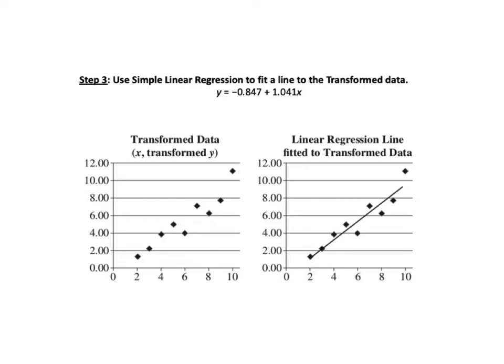Step 3, use simple linear regression to fit a line to the transformed data. On the left is a graph of the data in which the Y value of each pair of XY data has been transformed. Since the transformed data is roughly in the shape of a straight line, we can use simple linear regression to give us the equation or formula for a straight line which fits the transformed data.